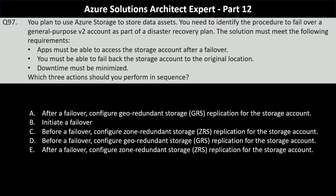You plan to use Azure storage to store data assets. You need to identify the procedure to fail over a general purpose V2 account as part of a disaster recovery plan. The solution must allow apps to access the storage account after failover, allow failing back to the original location, and minimize downtime. The options are: configure geo-redundant storage before failover, initiate a failover, configure zone-redundant storage before failover, configure geo-redundant storage after failover, or configure zone-redundant storage after failover.